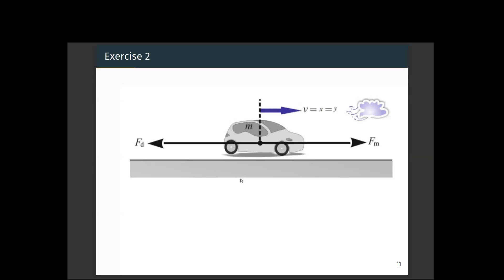Possible disturbances include wind, the smoothness of the road, and the friction of the tyre with the road. There can be many disturbances to the system. We will see many advanced control techniques which will take into account these disturbances while maintaining the speed of the car. This concludes the second example.